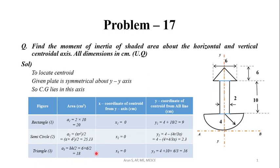For the triangle, area A3 = bh/2 = 18 cm². The centroid again lies on the y-y axis, so x = 0. The base distance from the bottom is 4 + 10 = 14. The centroid distance from the base of the triangle is h/3 = 6/3 = 2. So y3 = 14 + 2 = 16 cm.